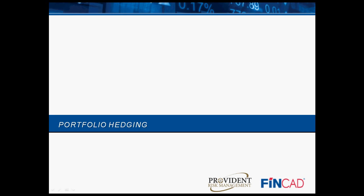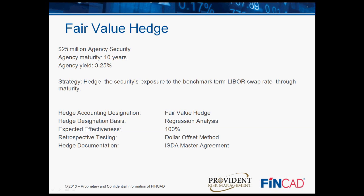First, we'll take a look at portfolio or asset hedging. This can cover hedging fixed income securities, loan pools, or mortgage-backed securities. In this first example, a bank wishes to hedge a fixed income security. When we approach this problem, we follow four basic steps.